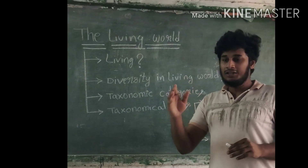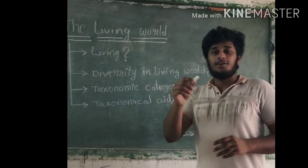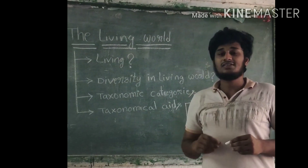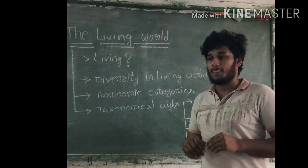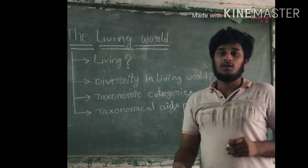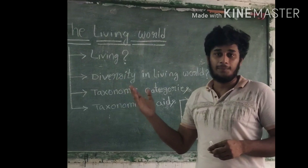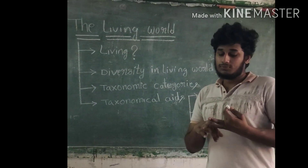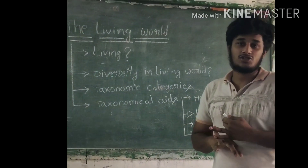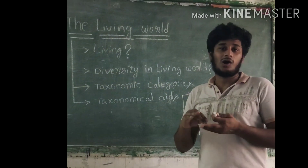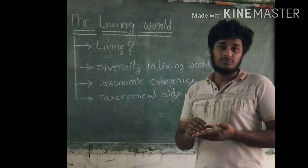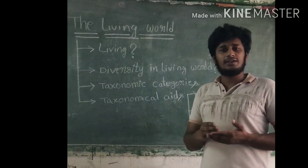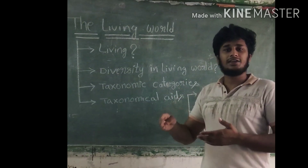In taxonomical categories, there are a few components. I will tell you from ascending to descending order. Species together form a genus. Genus together forms a family, then order, then class, then phylum, then kingdom. This is the order of taxonomical categories, from species up to kingdom.